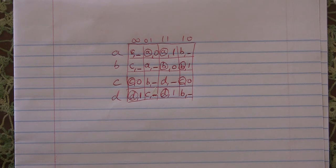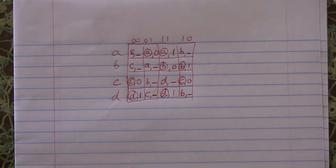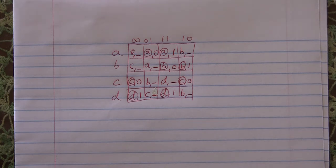What you're looking at is a flow table. The states which have circles around them have the output specified as either zero or one, but the unstable states which are uncircled have nothing specified for the output. It is our job to put in either a one, a zero, or an x, which means we don't care — whether it's one or zero.